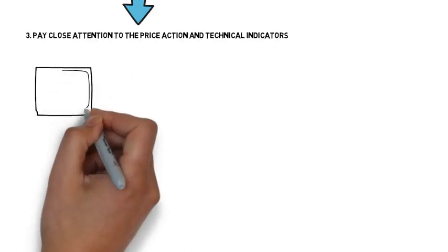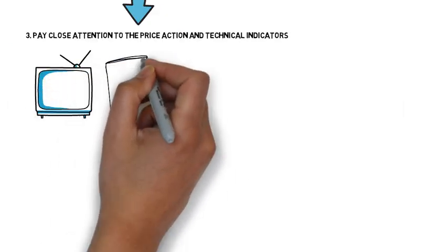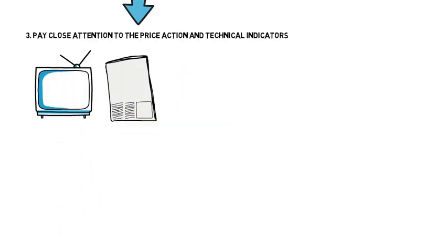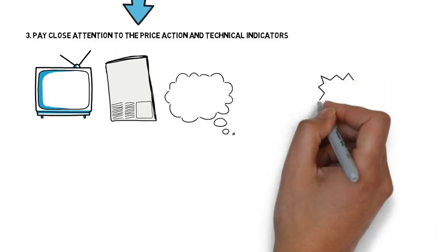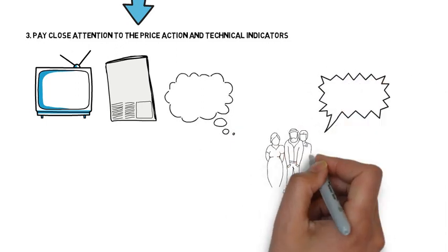This is why price action and technical indicators are crucial for investing and trading and separates it from the things you hear from the news, read from newspapers, articles and magazines. Because what you hear from the news, read from newspapers, articles and magazines are just views and opinions of other investors and traders.